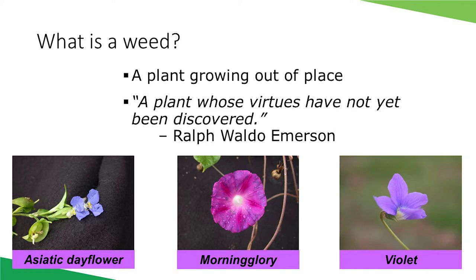So what is a weed? A weed is a plant that is growing out of place. It's not so much what the plant is — it's where the plant is. Desirable plants can become weeds when they spread into areas where they're not wanted. One person's weed may be another person's flower. Violet is the state flower, but many don't want it in their lawns.